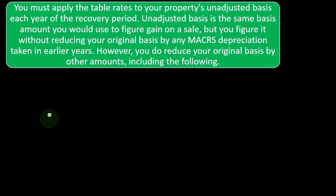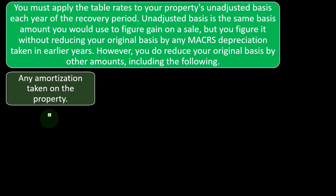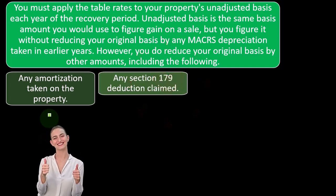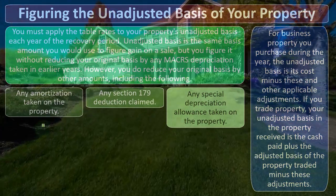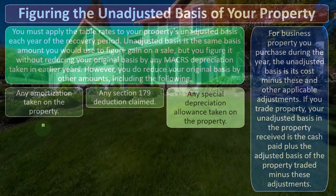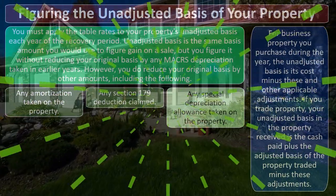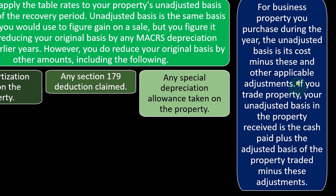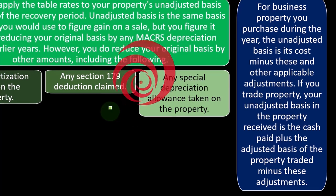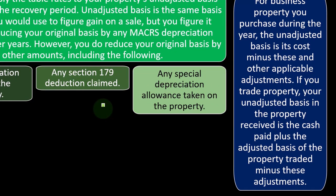However, you do reduce your original basis by other amounts, including: any amortization taken on the property, any section 179 deduction claimed, and any special depreciation allowance taken on the property for business property you purchased during the year. The adjusted basis is its cost minus these and other applicable adjustments. So normal depreciation — if you're using the tables, you take the cost in essence times these rates on the table. But then you've got these items — particularly the 179 and the special depreciation — which allow you to get a lot of depreciation in the year of purchase, which messes up the whole table thing. So you've got to figure out your basis after these items, and then use the tables.